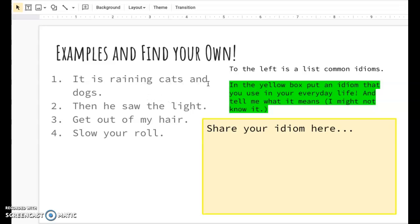Because when someone says it's raining cats and dogs, they do not actually mean that cats and dogs are falling from the sky. They mean it's raining really hard.